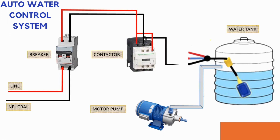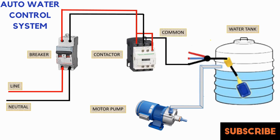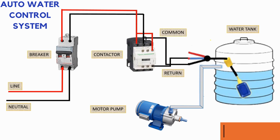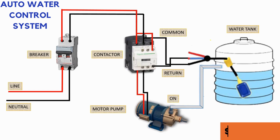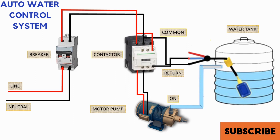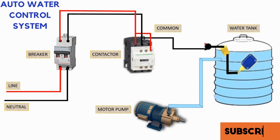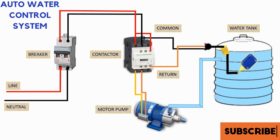Components: Motor — the pump or motor is responsible for water circulation. Float switch — a device that activates or deactivates the motor based on water levels. Control circuit — manages the interaction between the motor and float switch.